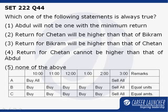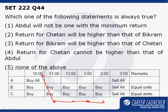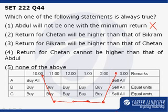Now, supposing the share price falls from 10 AM to a certain level at 11, remains constant at that price at 12, 1, and 2, and again rises back to the initial price at 3 PM. In this case, Abdul is making no profit and no loss, but B and C are both making profits as they are buying at lower rates than at which they are selling. So from this example, we can definitely cross out option 1.